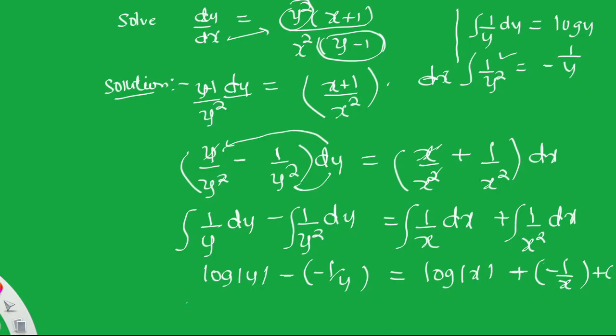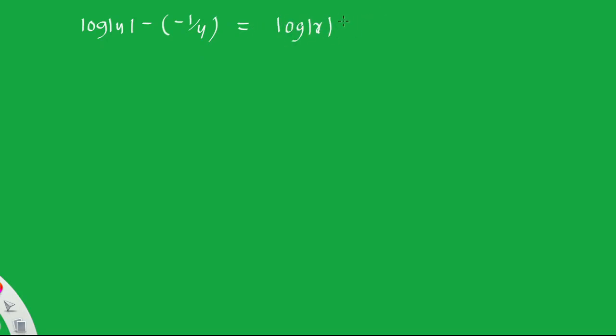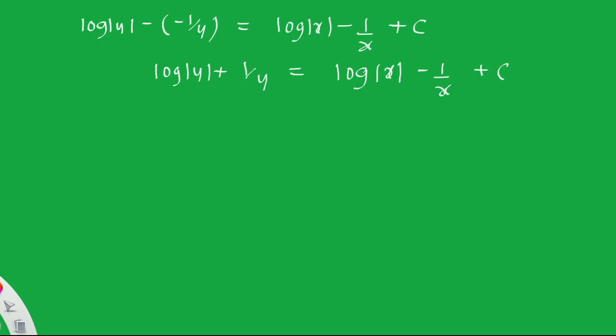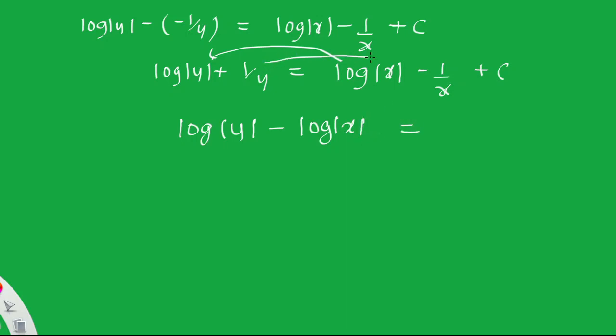Simplifying: log|y| + 1/y = log|x| − 1/x + C. Rearranging to bring log terms together: log|y| − log|x| = −1/y − 1/x + C.